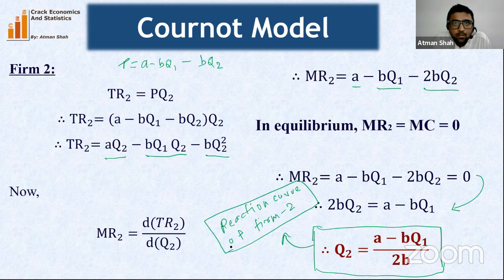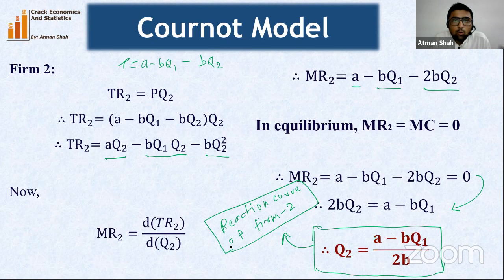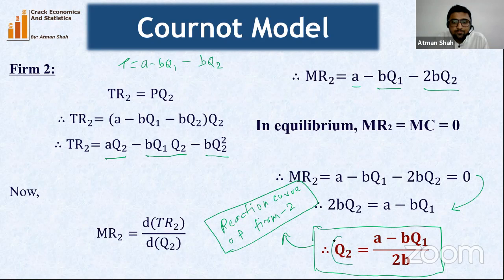The reaction function of firm 2 shows that the quantity of firm 2 depends on the quantity of firm 1. We now have two reaction curves: Q1 = (a − bQ2) / 2b and Q2 = (a − bQ1) / 2b. These show how each firm reacts to the output of the other firm.